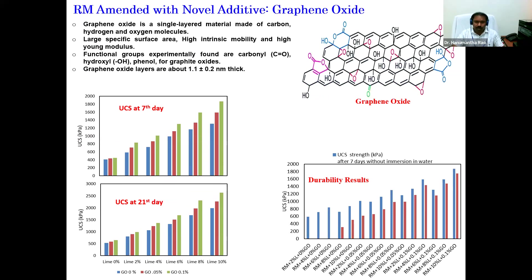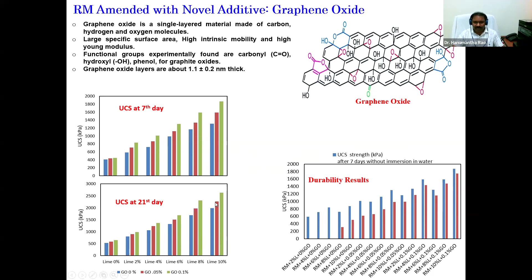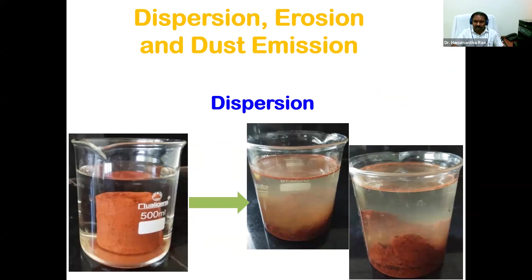Where high water content is a problem, graphene oxide can be recommended. By admixing graphene oxide in small proportions along with lime, we stabilized bauxite residue and measured unconfined compressive strength (UCS) at 7-day and 21-day curing periods, also assessing durability. Results showed significant strength of more than 2 MPa at 7 and 21 days. After immersing samples in water for alternate 7-day cycles as a durability test, strength remained more than 1.5 MPa — significantly high.